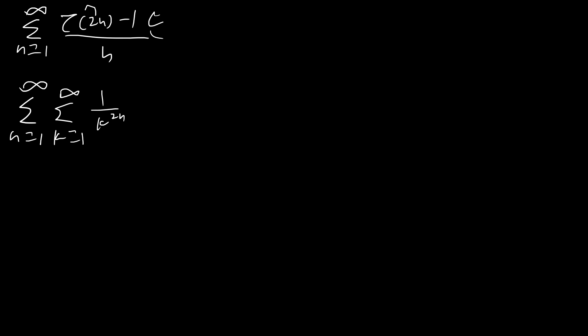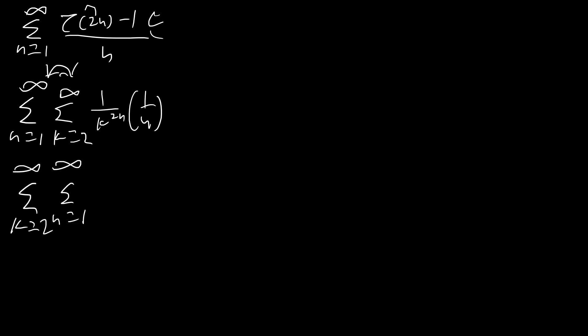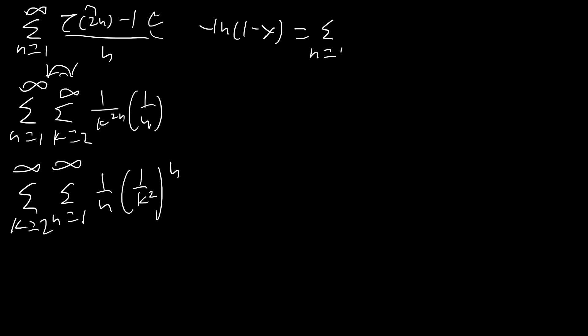Since we are subtracting that 1 at the beginning, we're actually going to be summing from k equals 2, because we're just subtracting out that first term, and of course we're still multiplying by 1 over n. Then we're going to exchange the order of summation, since these are all positive numbers, and reorganize this as 1 over k squared all raised to the n. Then we recall that negative ln(1 minus x) equals the sum from n equals 1 to infinity of x to the n over n, which is provable by integrating the geometric series.